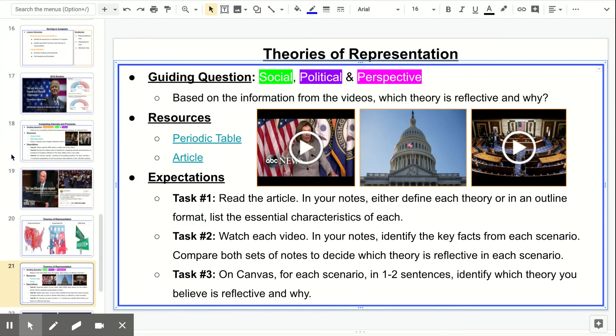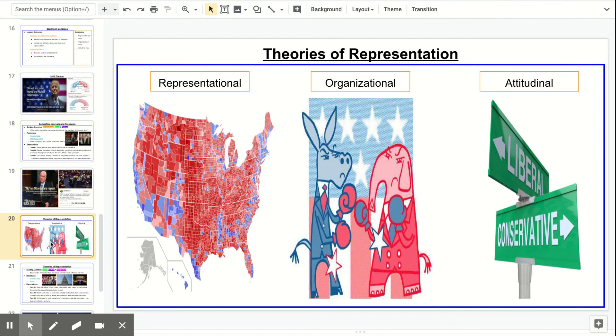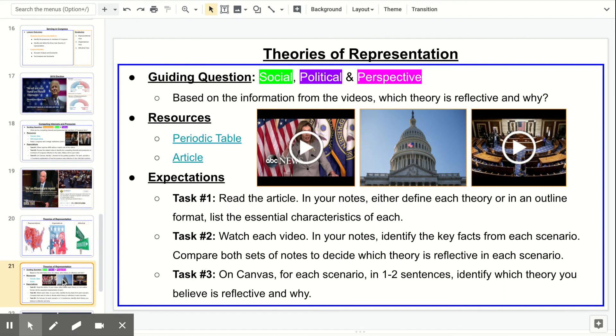So here's what I want you to do. Articles here. It's brief, just a little bit over a page, and it's going to hit on each one of these three again, these three different theories. So give you a little paragraph on each one. So first, read the article. In your notes, either define each theory or in an outline format, so just for each one, list a couple of essential characteristics. Again, you can go back to what I've been talking about to pull out some ideas as well.